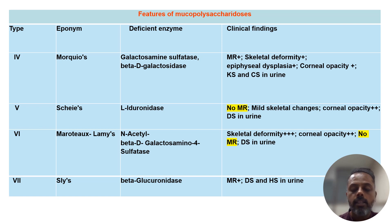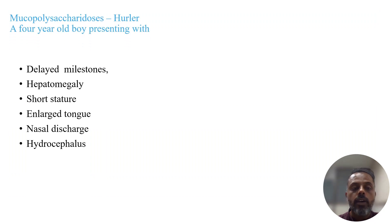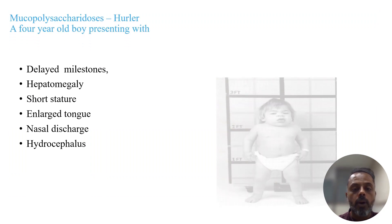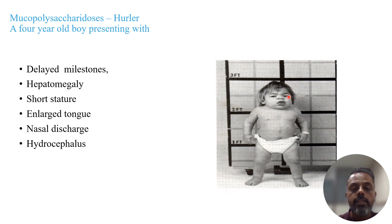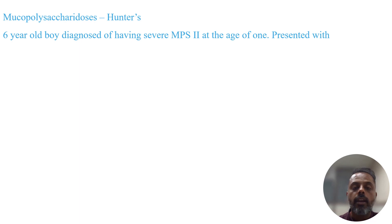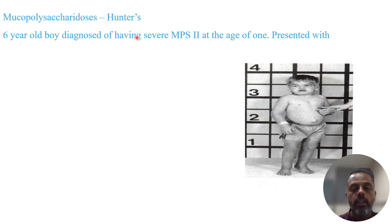Now we will see various case studies with images. The first is related to Hurler's syndrome — from the picture you can see there is short stature, developmental delay, enlarged mouth and tongue, and hydrocephalus. The second case is Hunter's syndrome, diagnosed in a six-year-old boy, inherited as X-linked recessive. Features include umbilical hernia, hepatosplenomegaly, coarse facial features, stiffness of joints, short stature, developmental delay, hepatomegaly, joint stiffness, severe hearing loss (deafness), and recurrent ear infections.